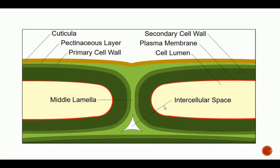This is what it looks like in the diagram: we have the middle lamella, the secondary cell wall, the plasma membrane, and the cell lumen — the internal part of the cell. The intercellular spaces between different middle lamellae are also visible.